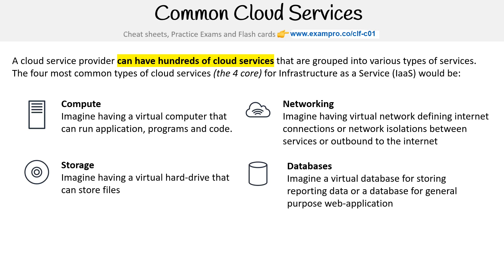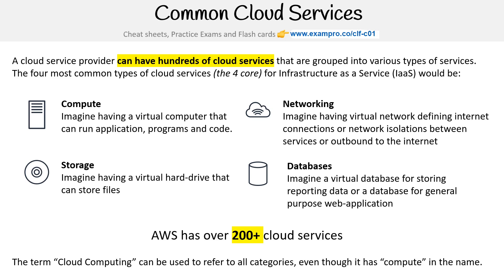AWS in particular has 200 plus cloud services. I want to clarify what cloud computing means — notice that we have cloud computing, cloud networking, cloud storage, and cloud databases. But the industry often just says 'cloud computing' to refer to all categories, even though it has 'compute' in the name. So when someone says cloud computing, they generally mean all of cloud, not just the compute sub-category.